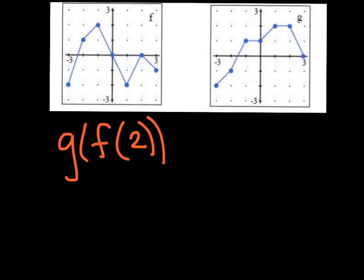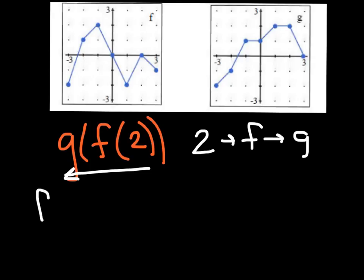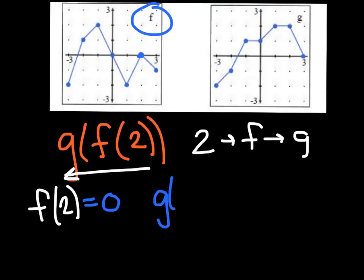Let's try g of f of 2. Working backwards: 2 goes into f, and that output goes into g. Finding f of 2: go to the f graph, input x = 2, and you'll notice the height of the graph there is 0. So now taking that output and finding g of 0: go to the g graph, find 0 as input, and the graph has a height of 1. So g of f of 2 = 1.